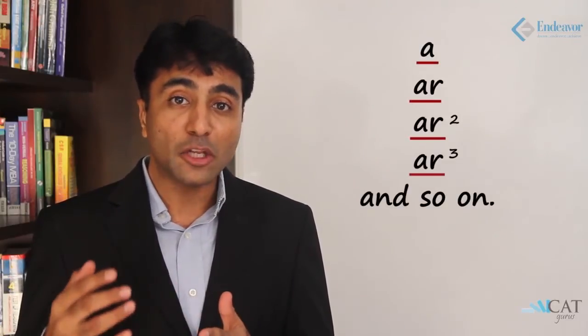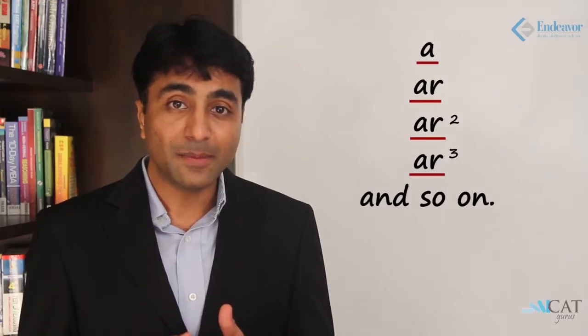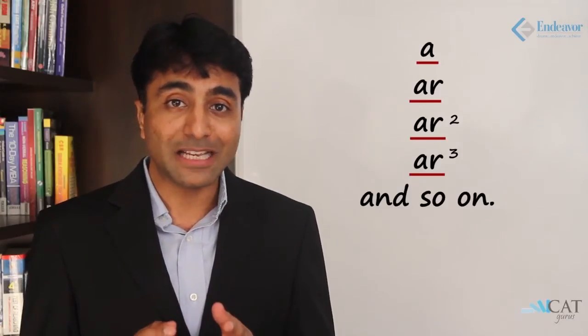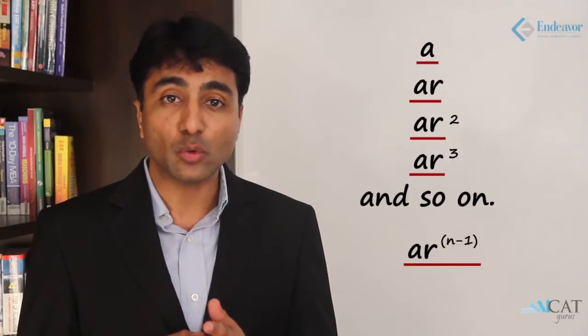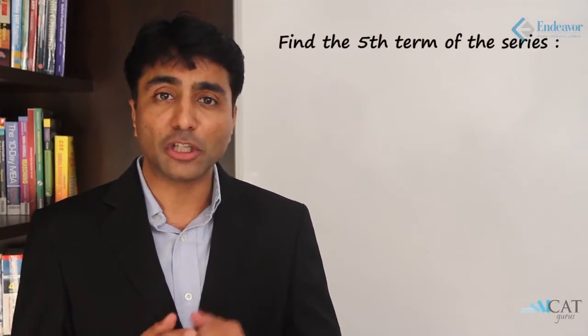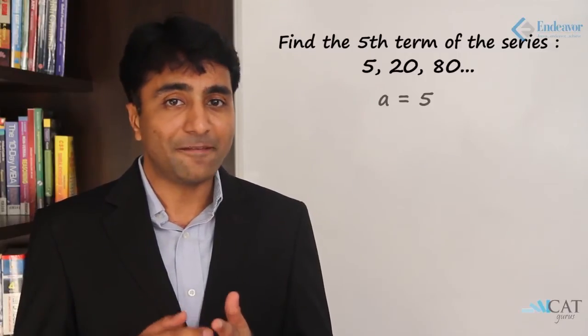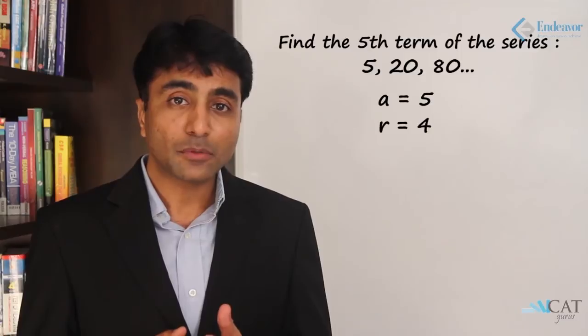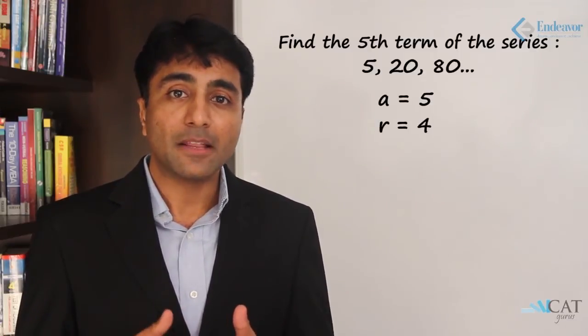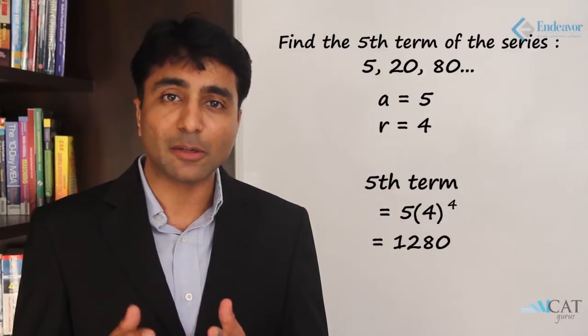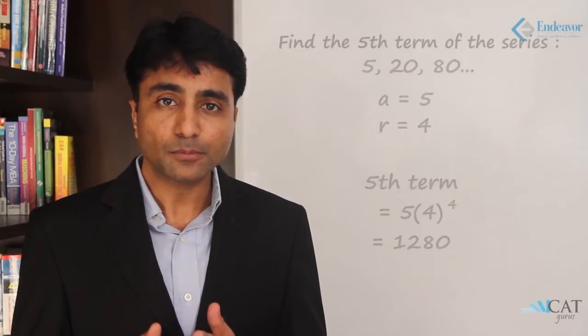The general term of a geometric progression is represented as a, ar, ar², ar³, and so on, where 'a' is the first term and 'r' is the common ratio. The nth term is a × r^(n−1). For example, to find the fifth term of 5, 20, 80, …: a = 5, r = 4, so the fifth term = 5 × 4⁴ = 5 × 256 = 1280.